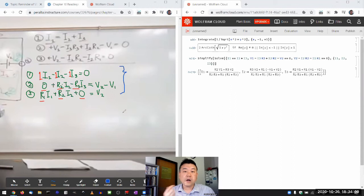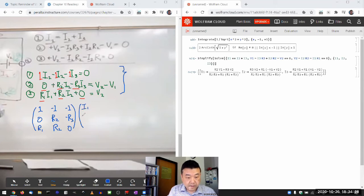So I'm going to rewrite this system of equations as a square matrix multiplying to column vectors. So I have the first three by three square matrix. One, minus one, minus one, zero, R2, minus R3, R1, R2, zero. And let me set this up with the column vector, I1, I2, I3.